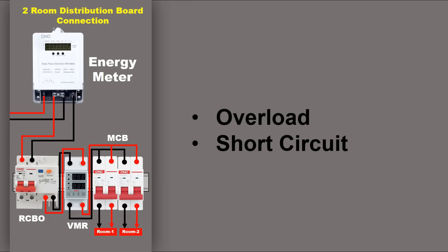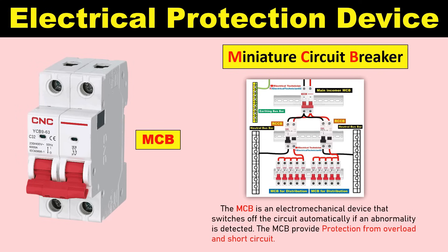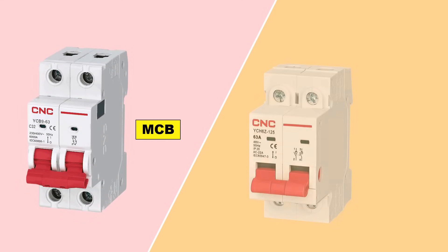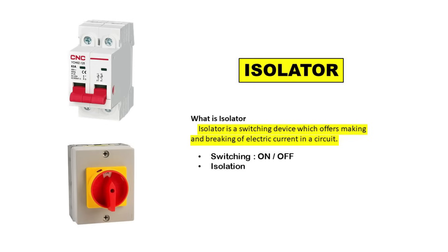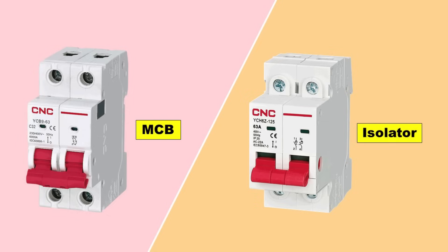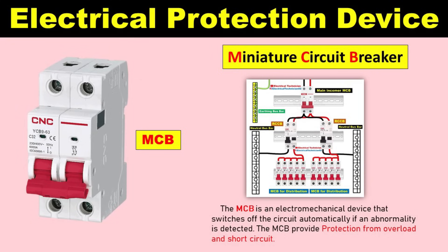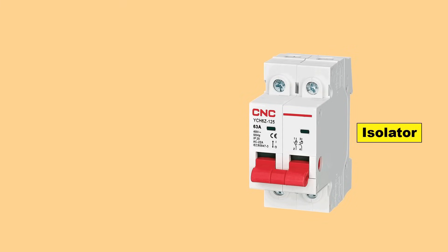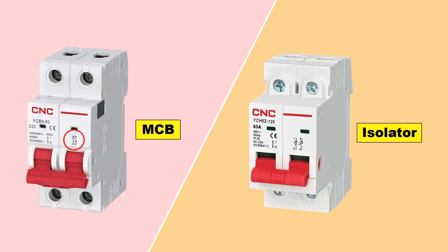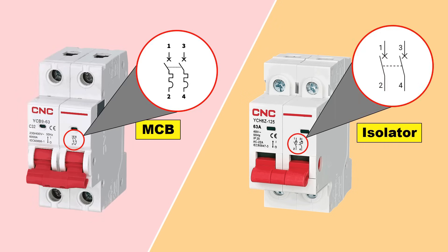For protection from these two faults, we generally use MCB. The MCB and the Isolator both look almost the same, so if you go to market to buy a MCB, the shopkeeper may sell you an Isolator in place of MCB. If you install an Isolator in your home, you will not get any kind of protection. You can look on screen at the symbol of MCB versus the symbol of Isolator, so whenever you go to buy a MCB, look carefully at the symbol to confirm whether it is MCB or not.